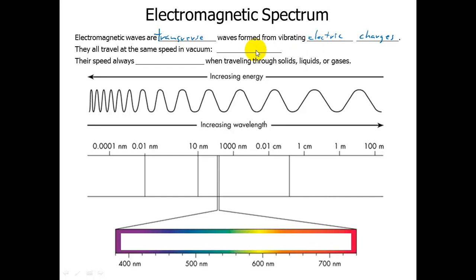There are some unique properties of EM waves. One is that they all travel at the same speed in vacuum. This speed has a special symbol. It's considered the speed limit of the universe. It's the fastest speed that we know that anything can move. And that is the speed of light, 3.0 times 10 to the 8 meters per second.